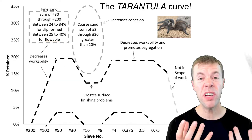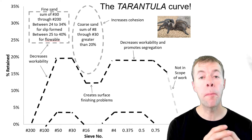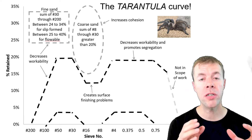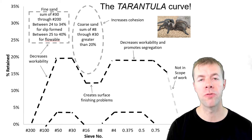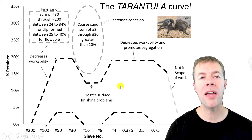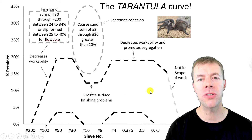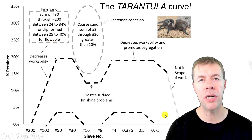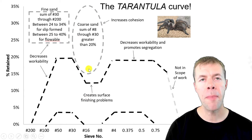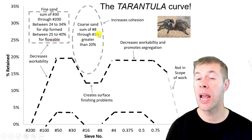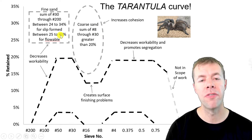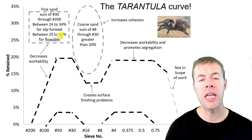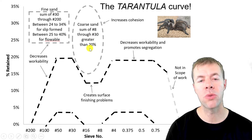Here's a picture of it — here's what it's all about. There are three parts to the tarantula curve. You plot your sieve size versus percent retained. You plot the amount of coarse sand you have — that's the number 8 through the number 30. You plot the amount of fine sands you have, the number 30 through the number 200. And you see if they fall in these boxes or in these ranges.